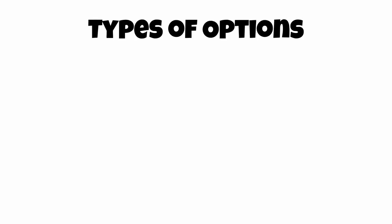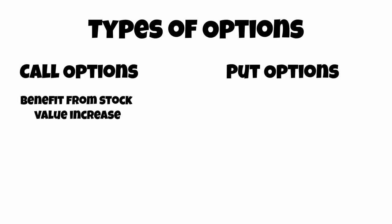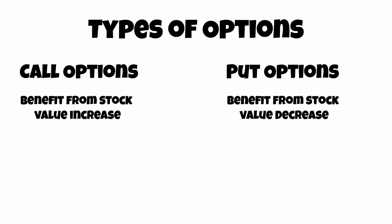There are two types of options you can purchase: call options and put options. Purchasing a call option allows you to benefit from an increase in the underlying asset's share price, and a put option allows you to benefit from a decrease in the underlying asset's value. In this video, we will go over call options.